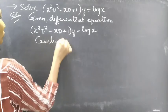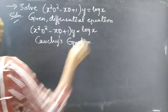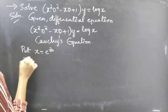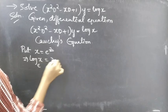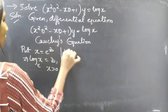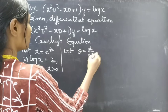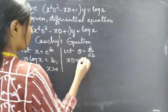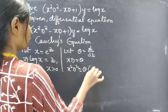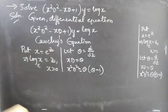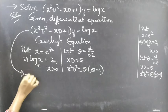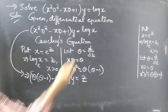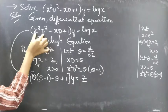Now we'll reduce this differential equation with variable coefficients to one with constant coefficients by making a substitution. Put x equals e^z, then log x equals z for x greater than 0. Let θ equals d/dz be the differential operator with independent variable z. Then x D equals θ, and x² D² equals θ(θ − 1).